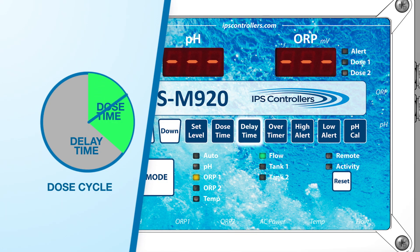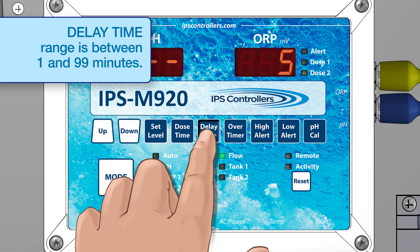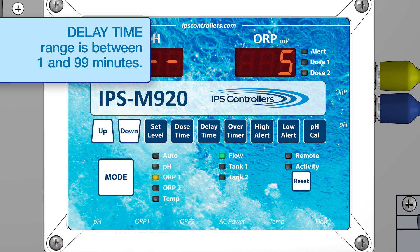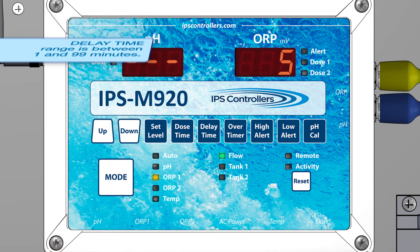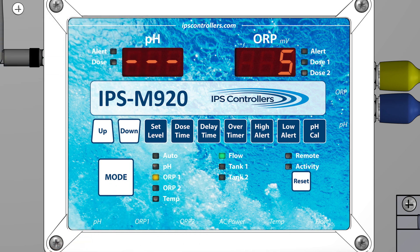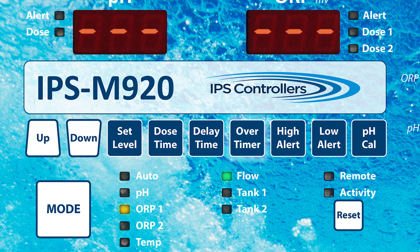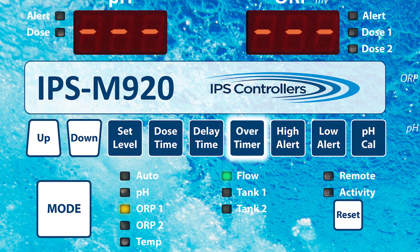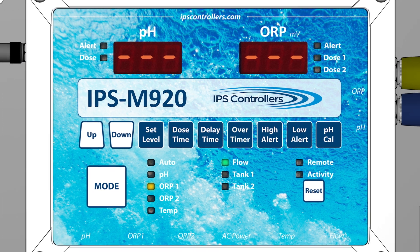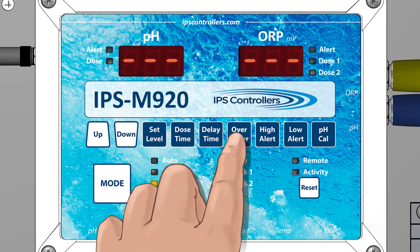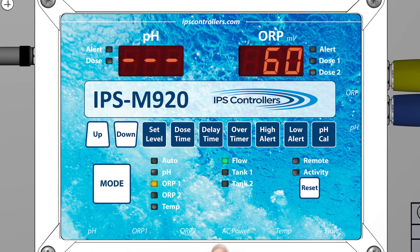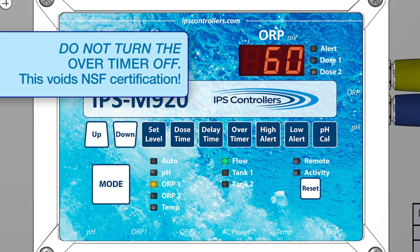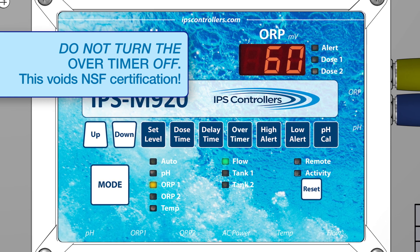The delay time is how long the controller waits between dose time cycles. The delay time function in the ORP mode is the same as in the pH mode — the 5-minute delay should be sufficient. The Over Timer functions in the ORP mode are the same as in the pH mode. The Over Timer is a safety mechanism; do not turn the Over Timer off.